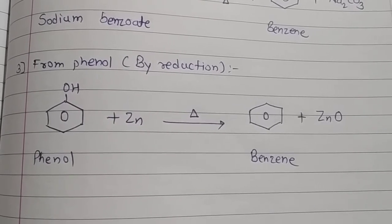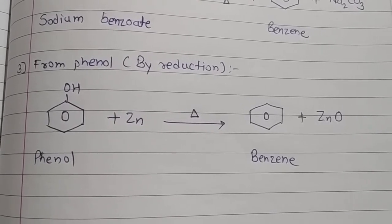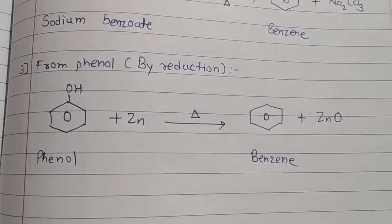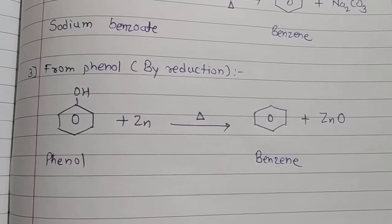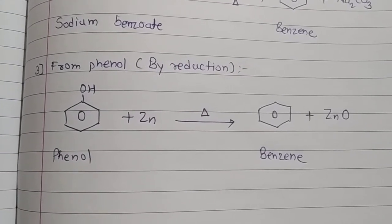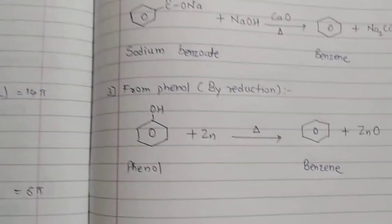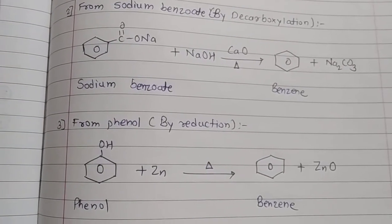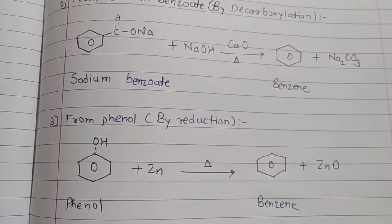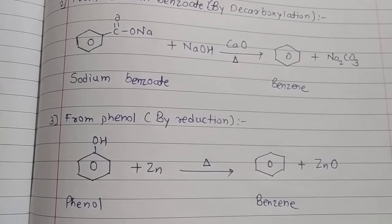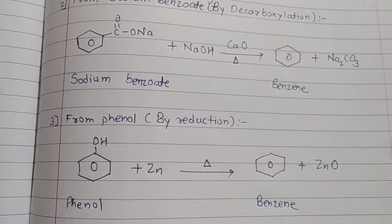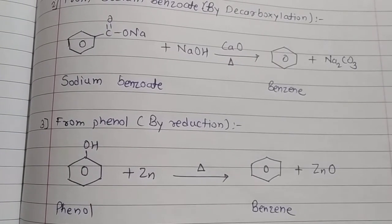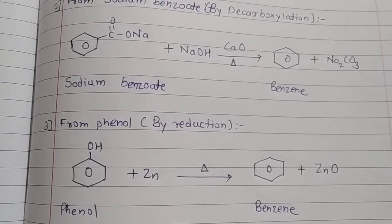So these are the three methods of preparation of benzene: first is from ethine, that is trimerization; second is from sodium benzoate, that is by decarboxylation; and third is from phenol by reduction. Industrially, the sources are coal tar and petroleum. Thank you for watching the video.